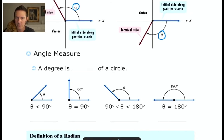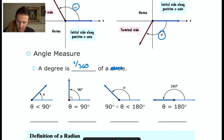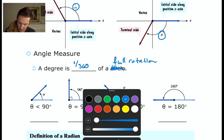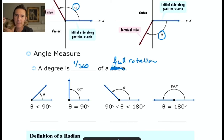A degree is one 360th of a circle — there are 360 degrees in a circle. Another way to say that for our purposes: a degree is one 360th of a full rotation. So if I spin around 360 degrees, I've spun all the way around and ended up right back where I started.